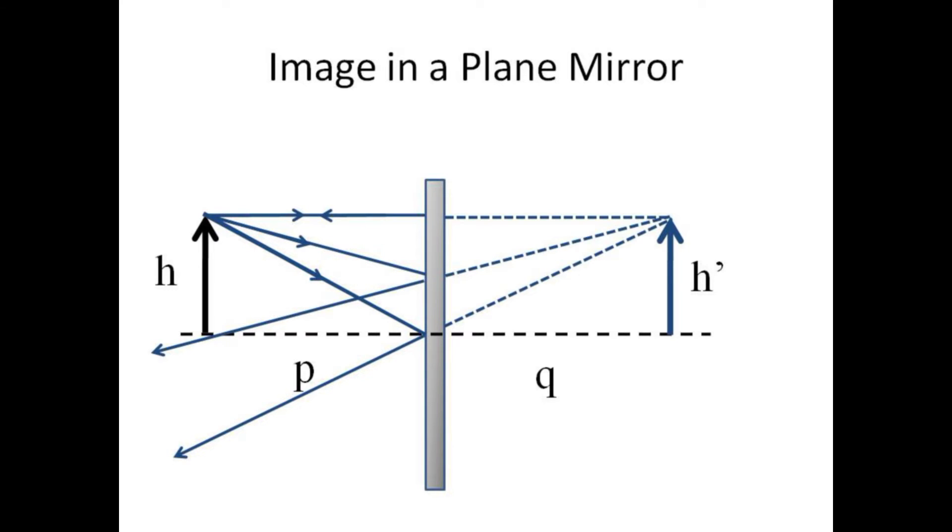The reflected rays all appear to diverge from one point behind the mirror. Tracing them back locates the image in the mirror at an image distance q. Note that for a plane mirror the image distance equals the object distance and the height of the image equals the height of the object.